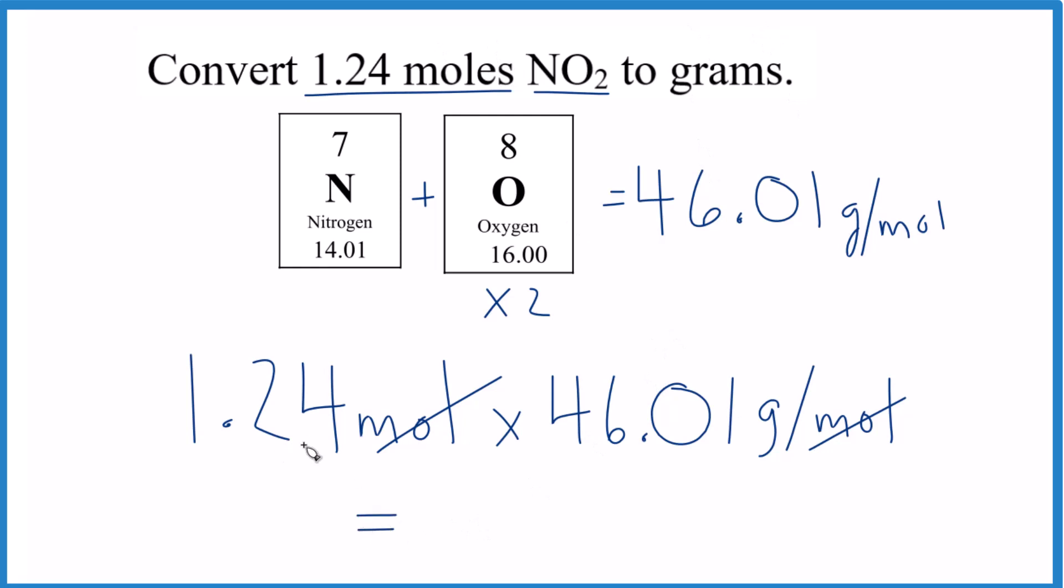Do the math. 1.24 times 46.01 grams, you get 57.2 grams of NO2. All right. One more.